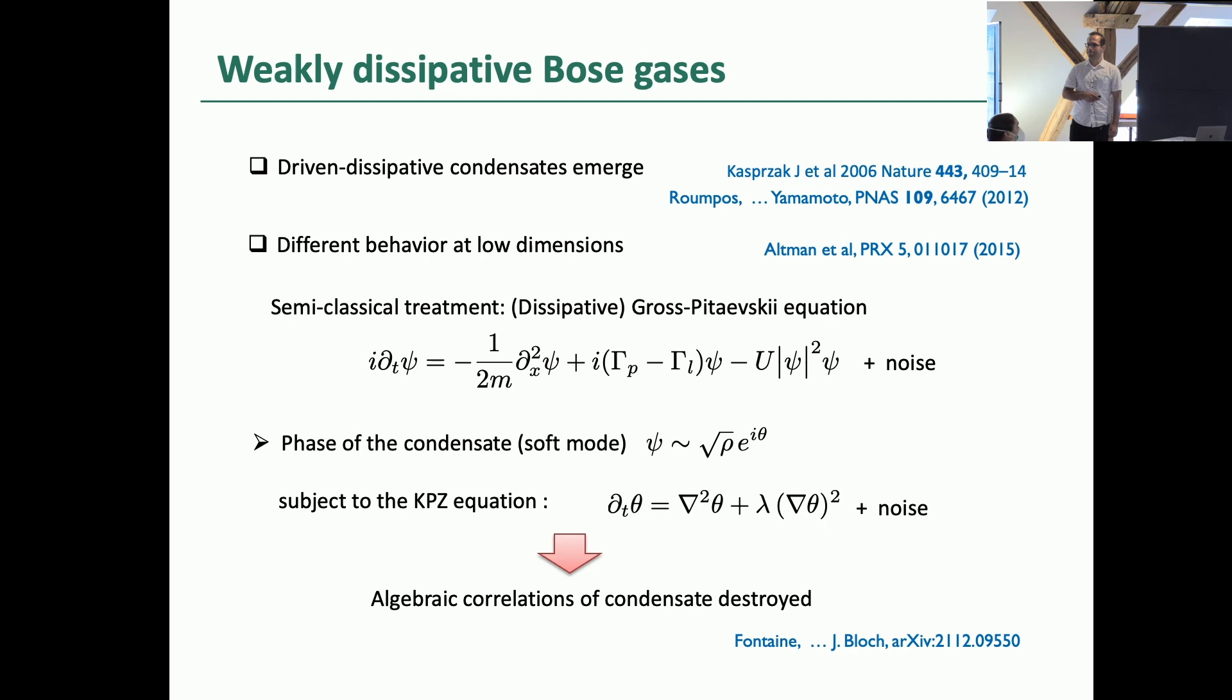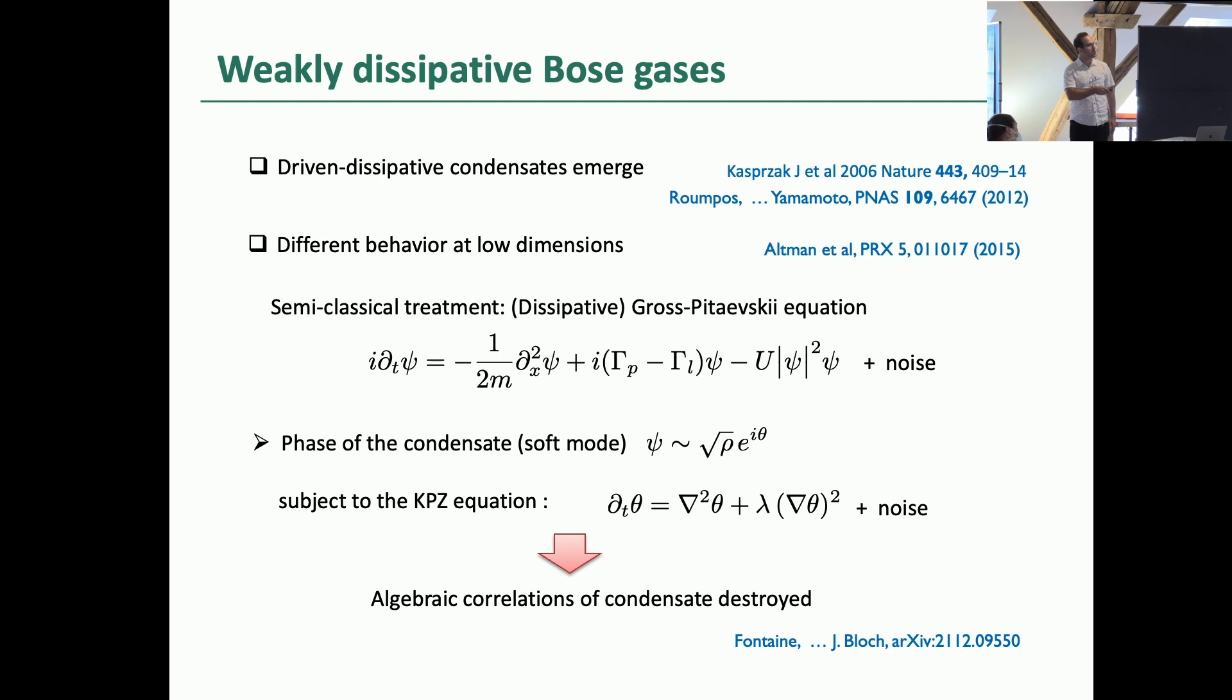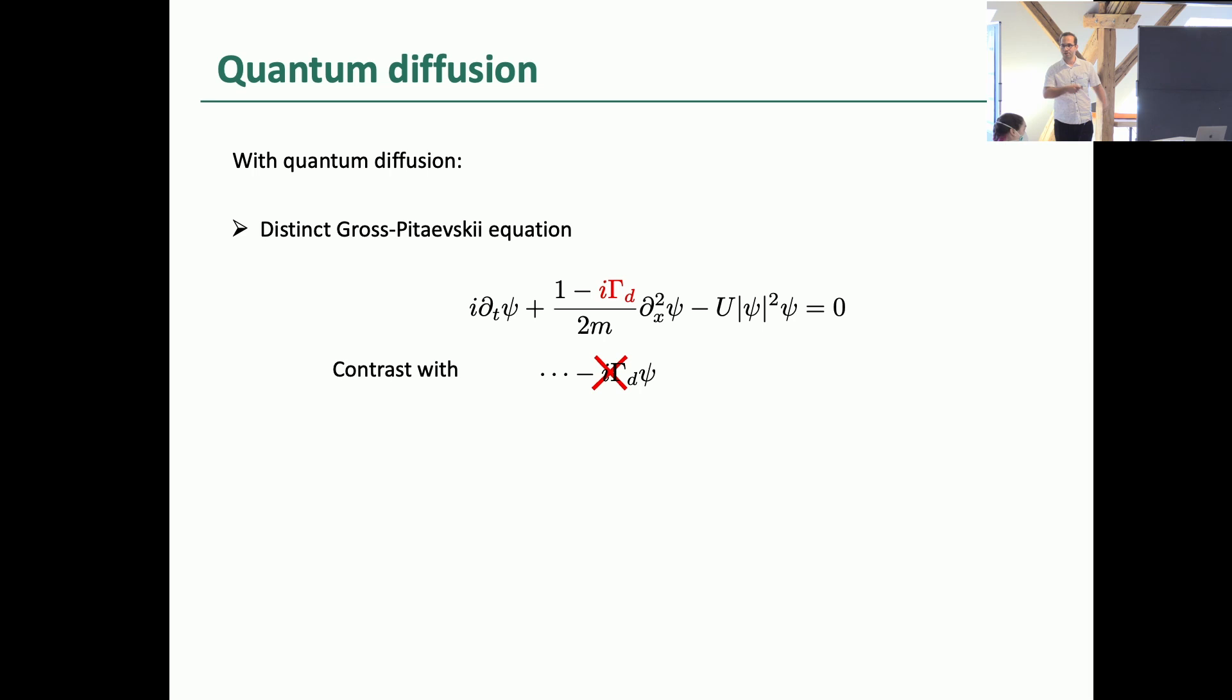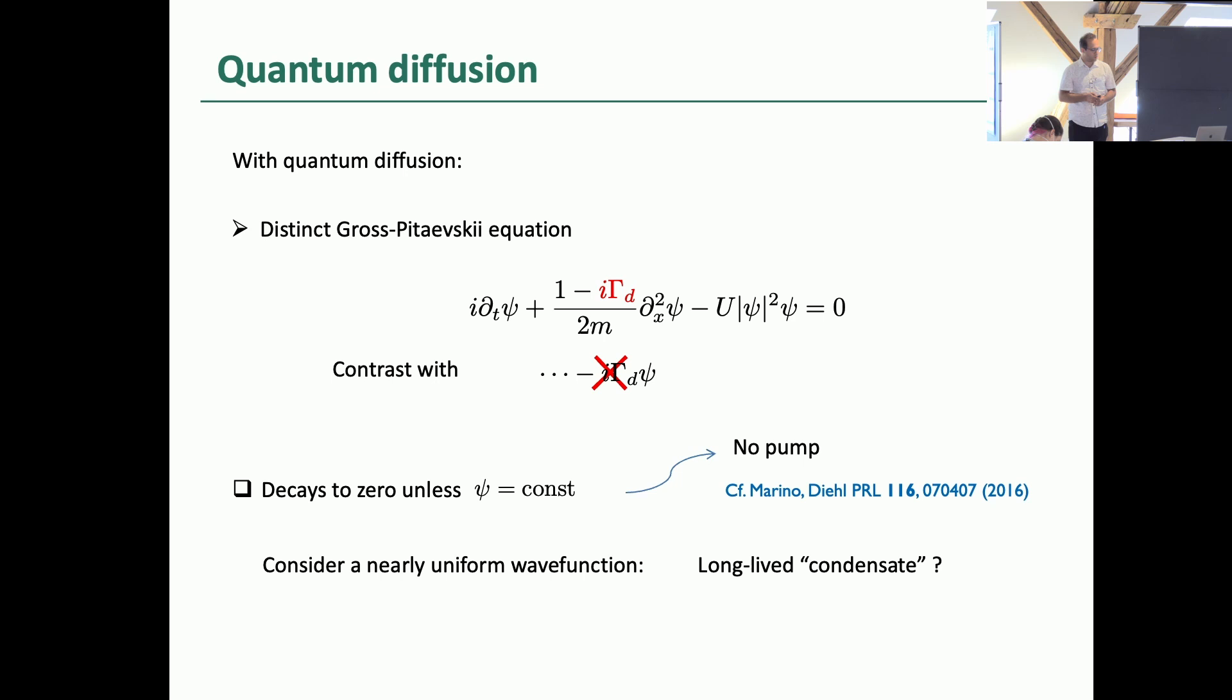So this is stuff that I actually don't want to talk about. In this case, you see that there is loss and there is pump. That's not what I wanted to talk. I wanted to talk about quantum diffusion. And you see that I'm repeating a simple mean field kind of semi-classical treatment here. So we get a Gross-Pitaevskii type equation. But notice that we don't have this damping term. It shows up as this imaginary coefficient in front of this Laplacian thing, right? So it goes into kind of the mass. So what happens here? This is actually a lossy system. So it decays to zero unless you start from a condensate, which is a wave function which is constant. So if you have a nearly uniform wave function, you would expect that you have a long-lived condensate, but eventually it just gets destroyed.